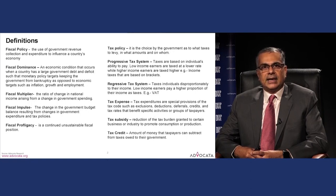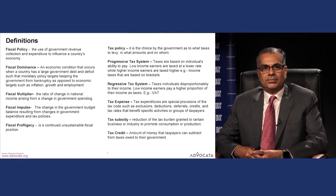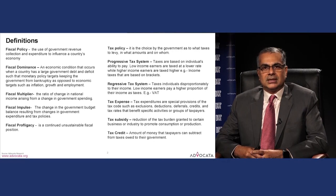A regressive tax system is one where individuals with lower income disproportionately pay higher taxes. A tax expenditure is a special provision of the tax code — such as exclusions, deductions, deferrals, credits, or tax rates — that benefits specific activities or groups of taxpayers.